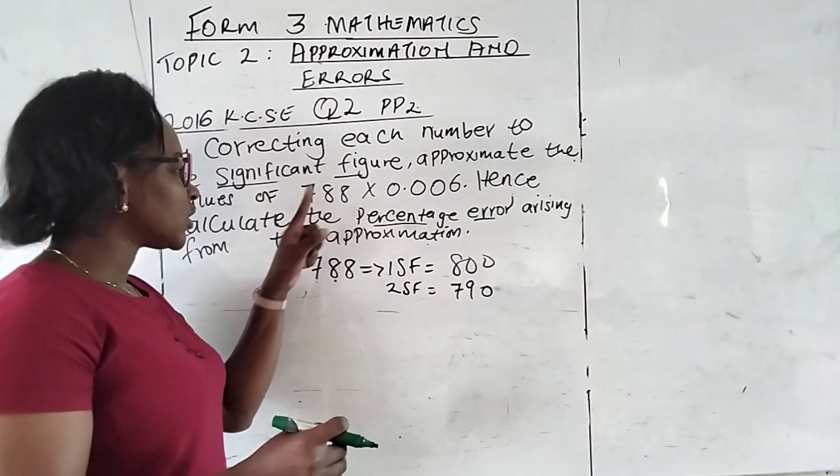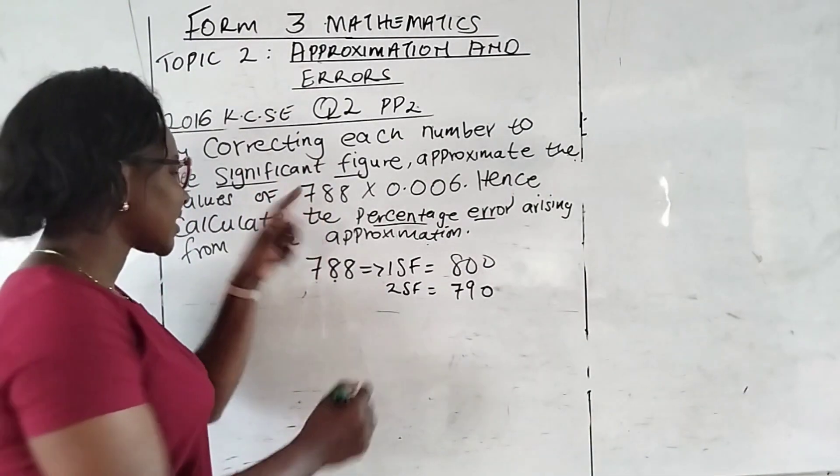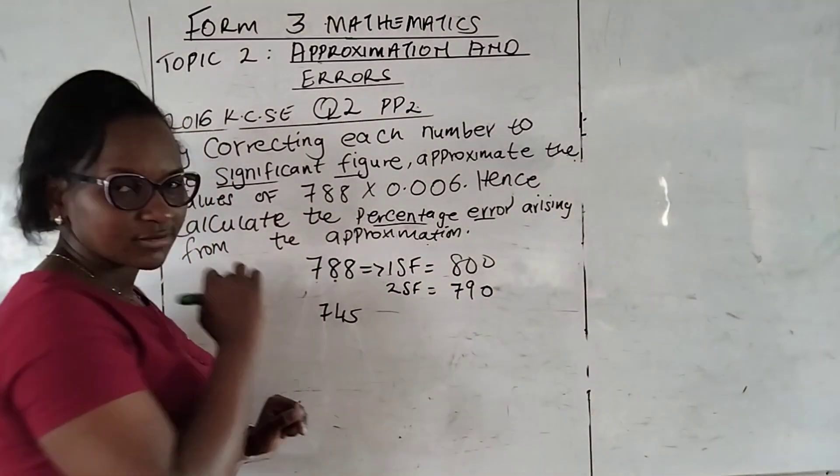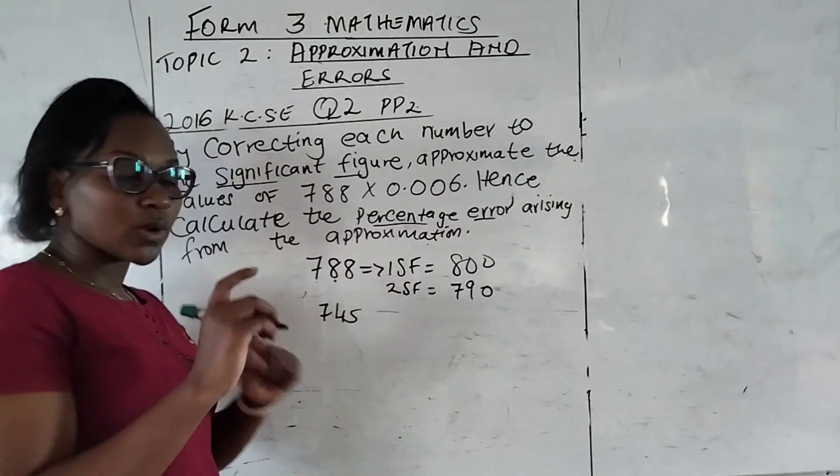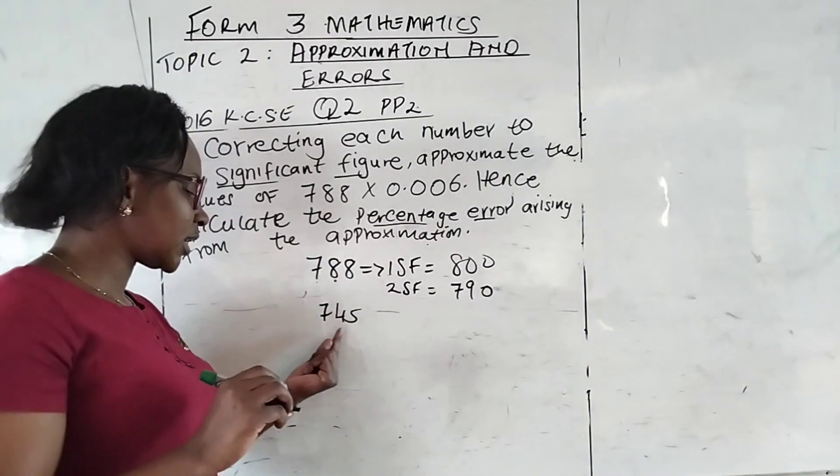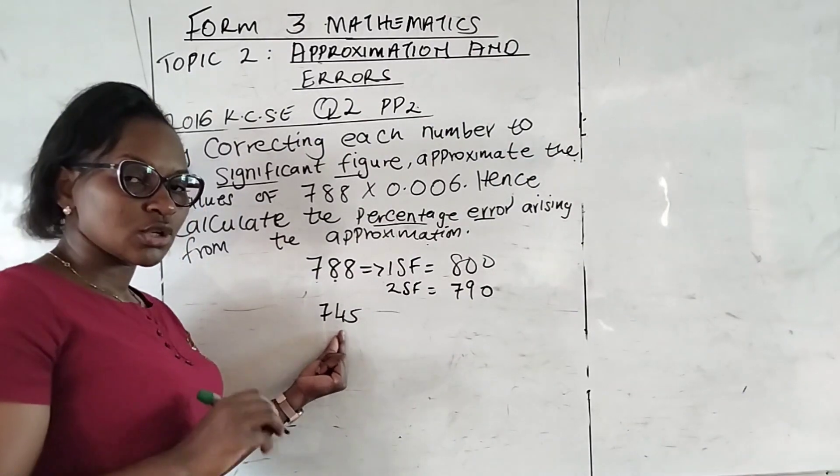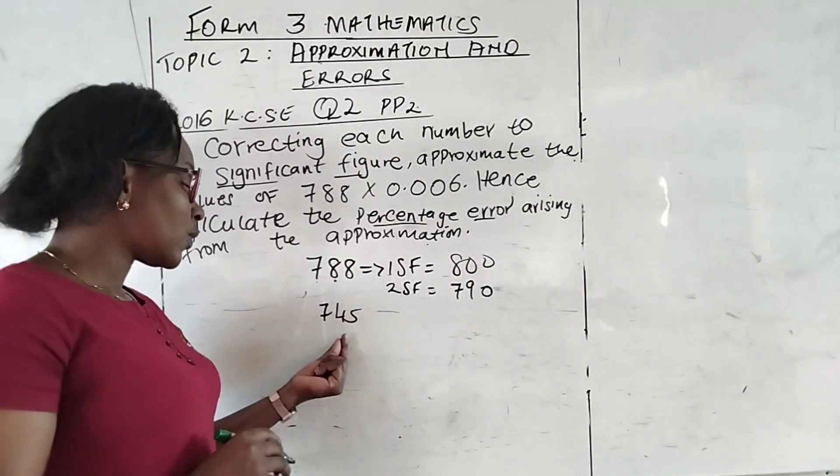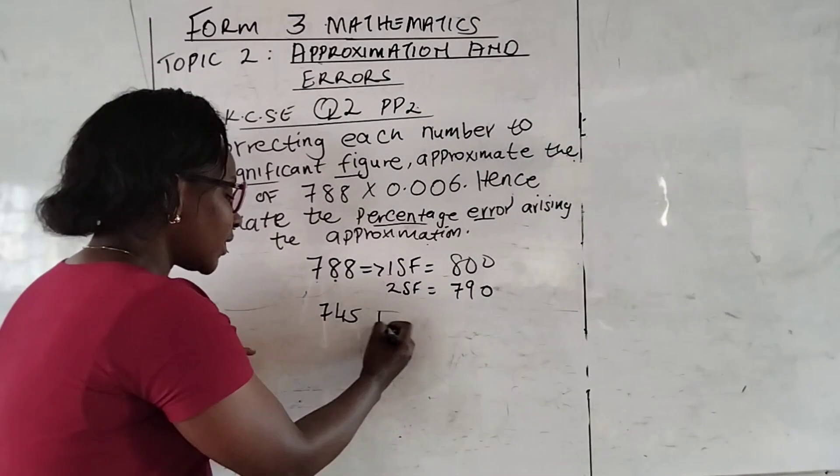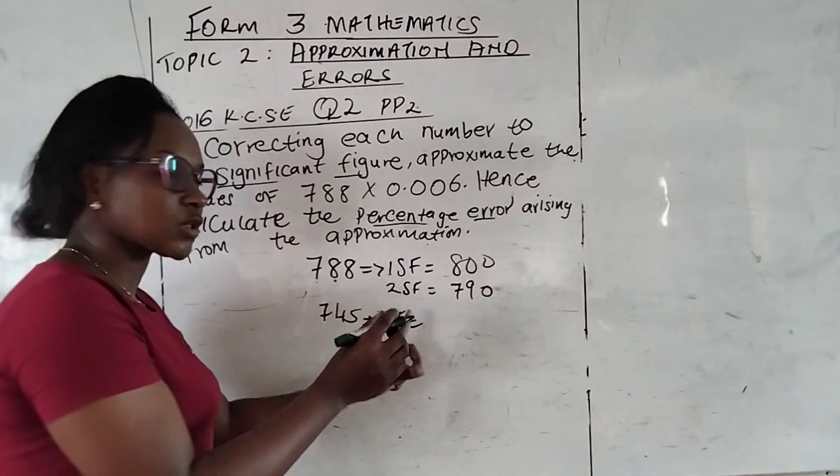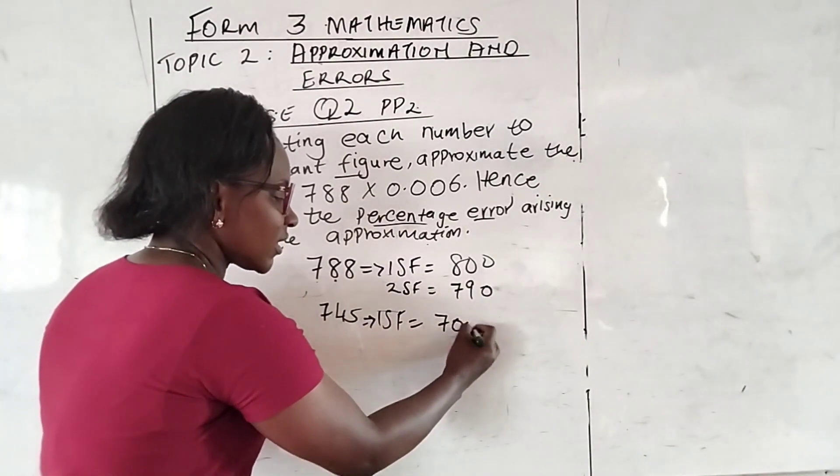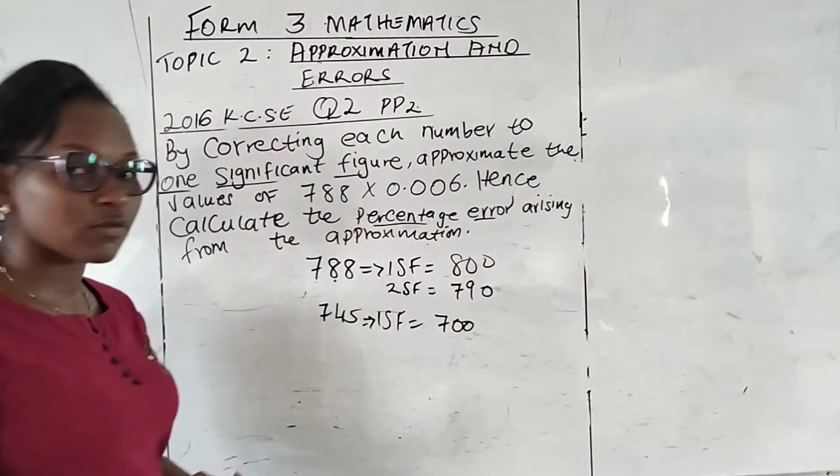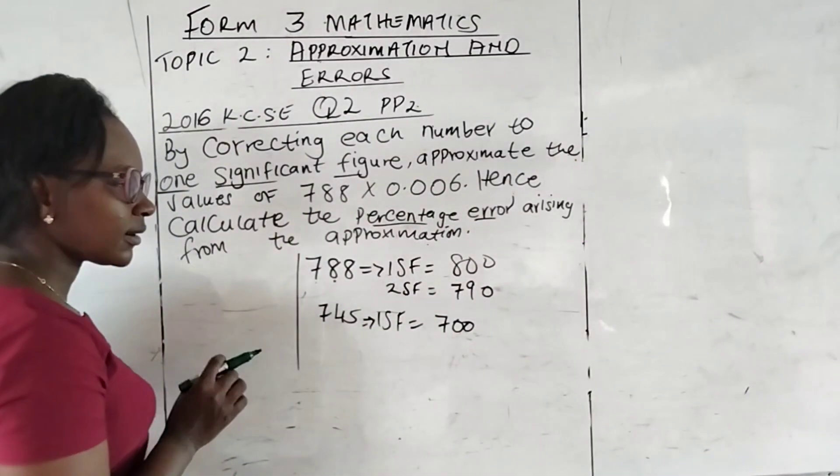If the question was something less than 788 or something like 45 correct to one significant figure, it is very clear. We are going to look at the second value. Is it 5 or more or less than 5? For our case here, it is 4 and 4 is less than 5. So one significant figure for this one is going to be 700.